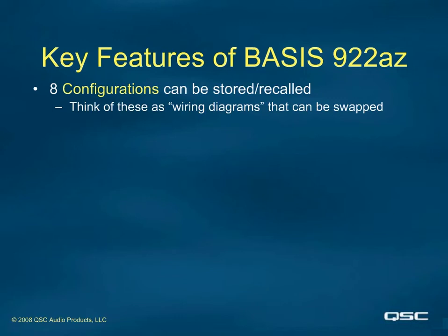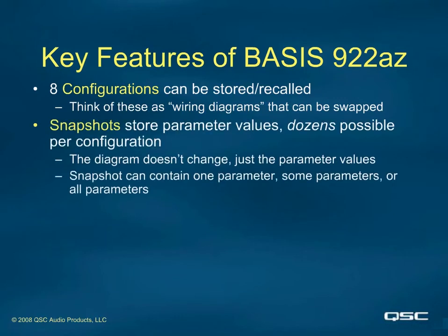The second term is snapshot. A snapshot is used to store the current values of parameters of various DSP and AMP functions. A snapshot could contain just one parameter, or a few parameters, or all of the parameters of a config. Snapshot memory is dynamically allocated as it's required, so unlike configs, which have defined blocks of memory, a snapshot might take more or less memory as needed.